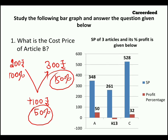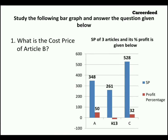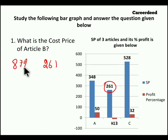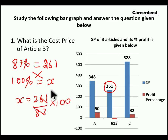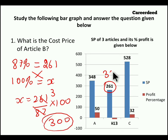Now let us enter into the first question: what is the cost price of article B? We know selling price is 261 rupees. If I sell the article for 261 rupees, I will get a 13 percent loss, which is only 87 percentage of cost price. To find cost price, which is 100 percentage, we set 100 percentage equal to X. Cross multiplying, you get X equal to 261 divided by 87 into 100. Since 261 is 3 times 87, we get 3 into 100 equals 300. So cost price of article B is 300 rupees.